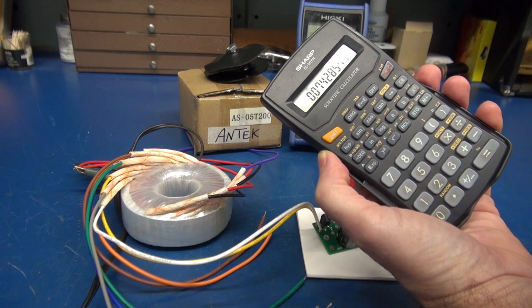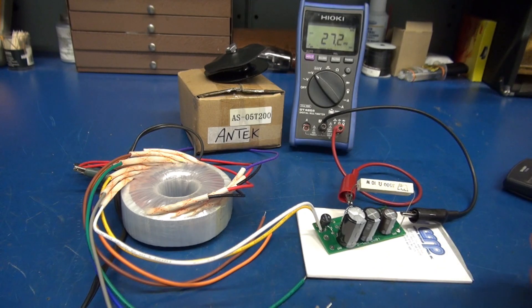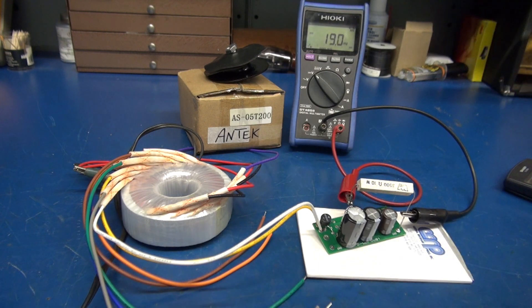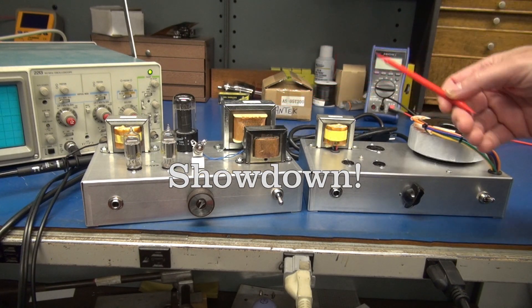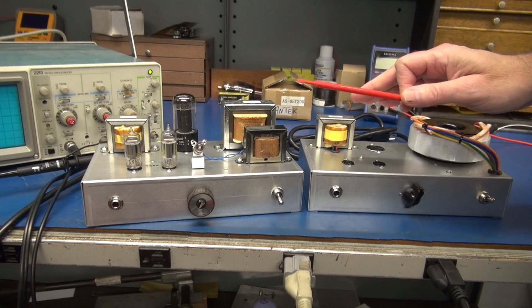Plenty of current for any small Class A amplifier you want to build. So that is the next step. We're going to take this transformer and put it on a chassis utilizing the same circuit as the Triad, and we will compare them. Performance test: the Triad versus the Antec.